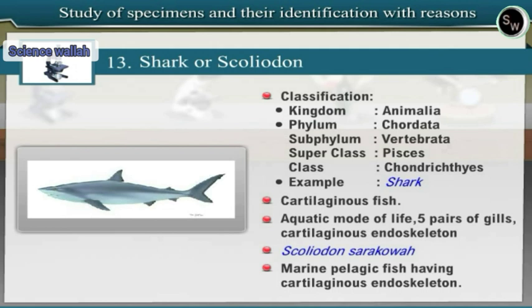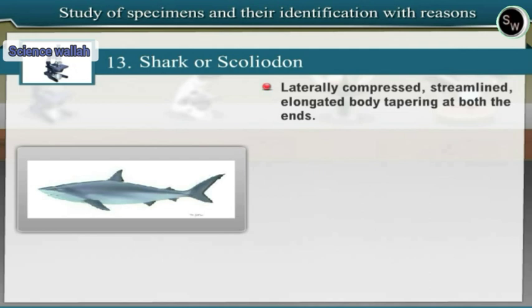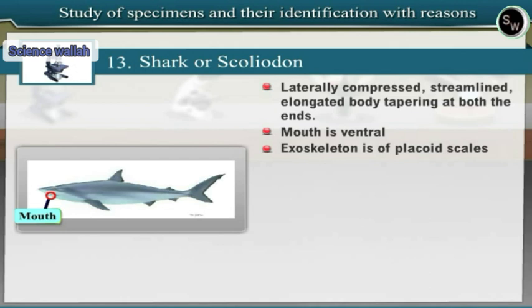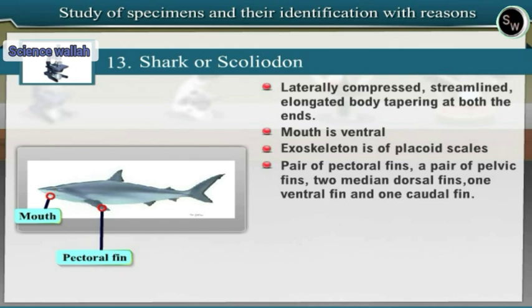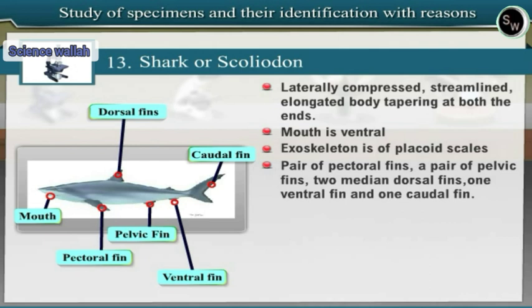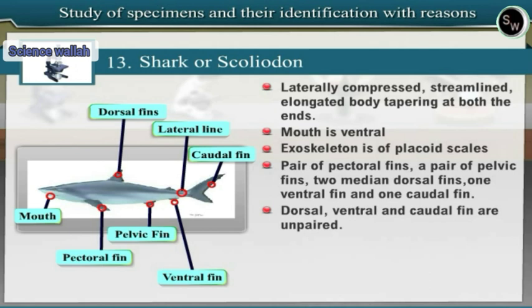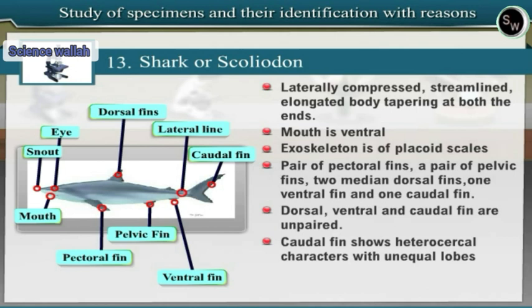Shark possesses a pair of pectoral fins, a pair of pelvic fins, two median dorsal fins, one ventral fin and one caudal fin. Of these, the dorsal, ventral and caudal fins are unpaired. The caudal fin shows heterocercal characters with unequal lobes. Shark shows five pairs of uncovered gill slits. The operculum is absent.